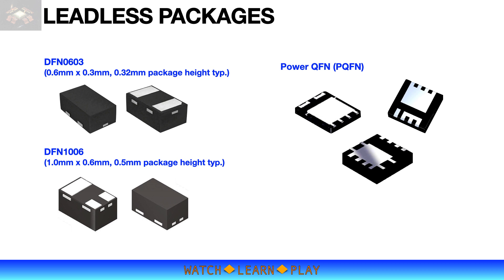More applications have limited board space, thus requiring much smaller packages. DFN packages are made for this type of application. DFN stands for Dual Flat No Leads. DFN 0603 is a two-terminal package for diodes with size and height less than a millimeter. DFN 1006 is a three-terminal version for small signal transistors and MOSFETs. There is also a Power QFN package for power discrete devices, which has an exposed pad and can be configured for dual die or large die-sized applications, giving flexibility to both power handling and board space requirements.